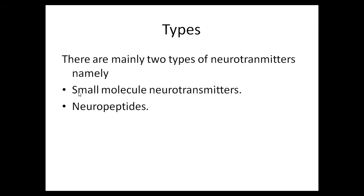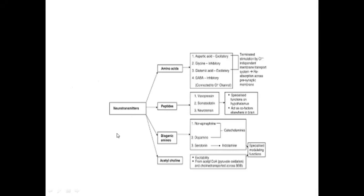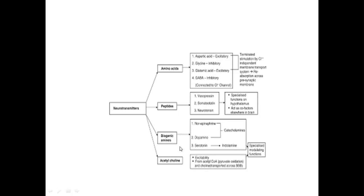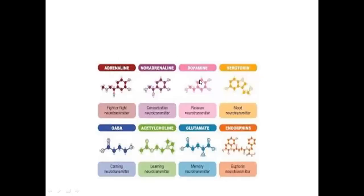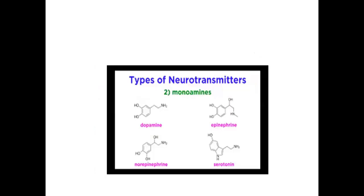Broadly, there are two categorizations of the neurotransmitters: number one, small molecule neurotransmitters, and neuropeptides. Looking at the flowchart, you can see the classification of the neurotransmitters and the different types that come under different groups — acetylcholine, biogenic amines, peptides. Some of the amino acids directly function as neurotransmitters: glycine, glutamic acid, GABA, aspartic acid. There are also peptides such as vasopressin and serotonin. The biogenic amines are also present and we shall see each one step by step. The chemical structures of the different neurotransmitters can be visualized here.